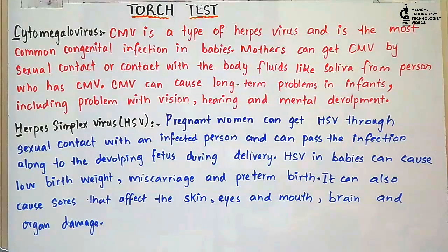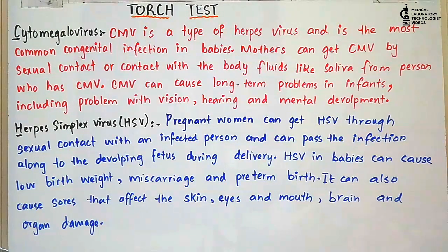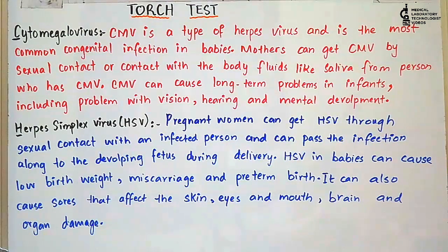H stands for Herpes Simplex Virus. A pregnant woman can get herpes simplex virus through sexual contact with an infected person, and can also pass the infection to the developing fetus during delivery. Herpes simplex virus in babies can cause low birth weight, miscarriage, and preterm birth. It can also cause sores that affect the skin, eyes, mouth, brain, and organ damage.